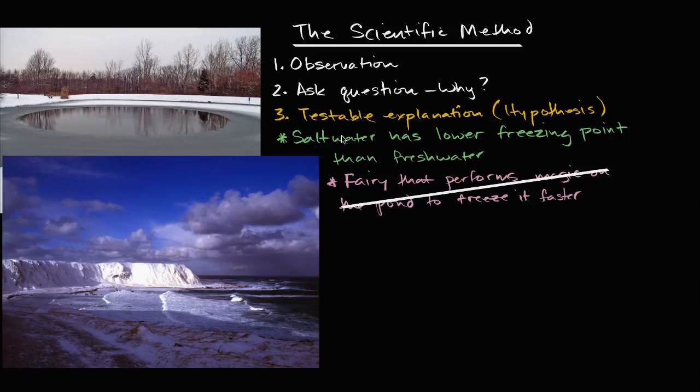So let's go back to our testable explanation, our hypothesis: salt water has a lower freezing point than fresh water. The next step would be to make a prediction based on that. And this is the part where we're really designing an experiment. So you could just view all of this as designing an experiment.